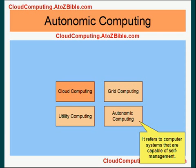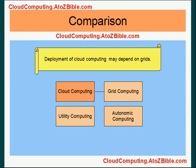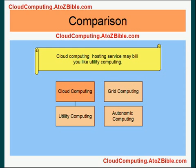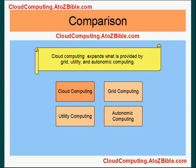So there are four different concepts. However, deployment of cloud computing may depend on grids. Similarly, cloud computing may have autonomic characteristics in it. Cloud computing hosted services may be billed like utility computing. Cloud computing expands upon what is provided by grid computing, utility computing, and autonomic computing.